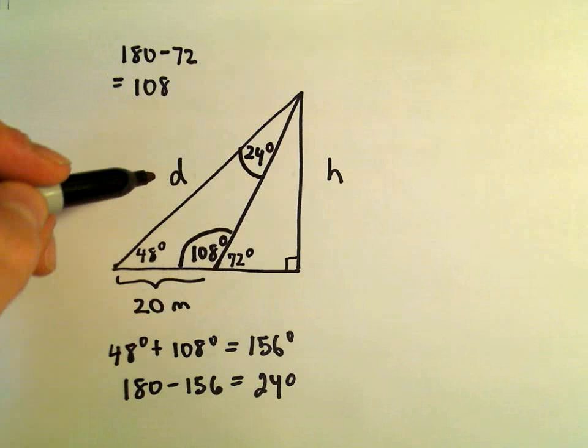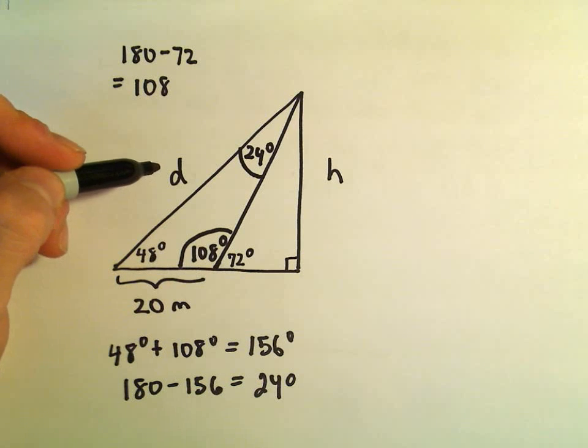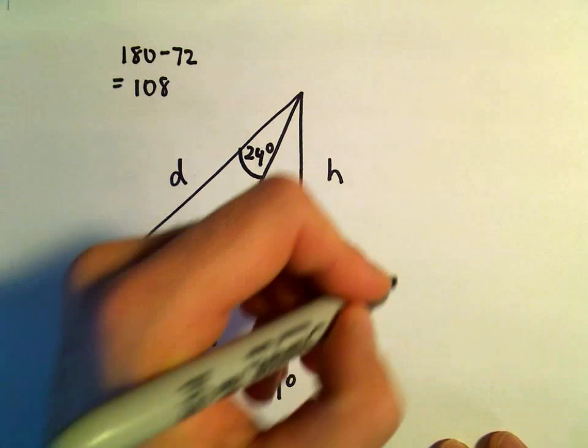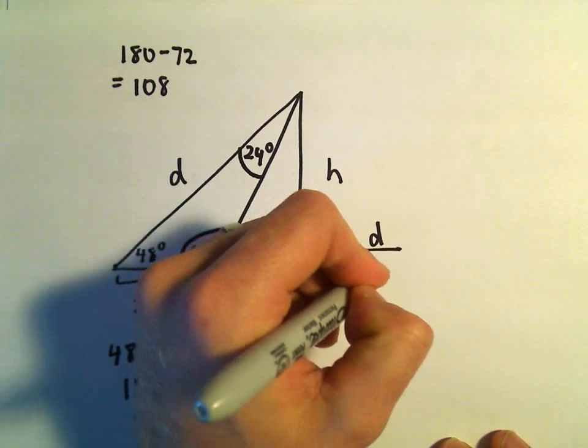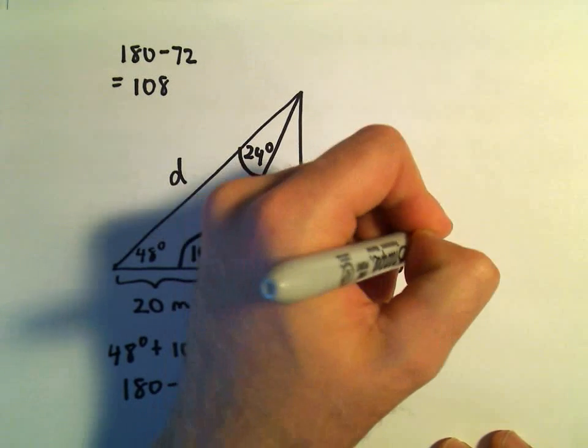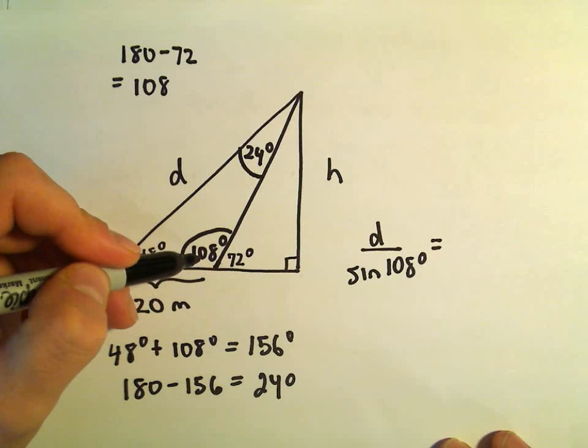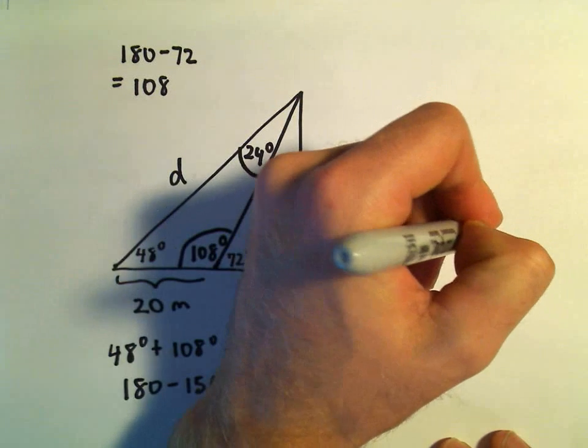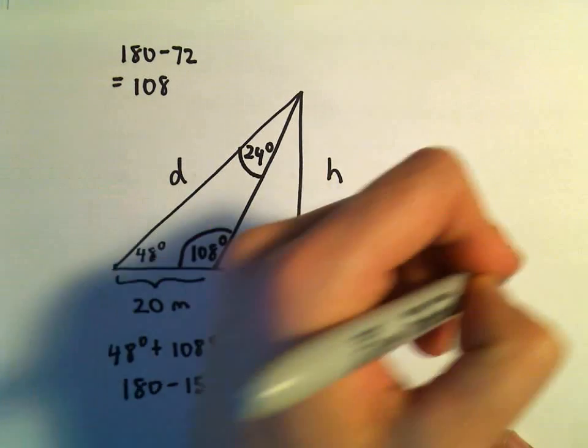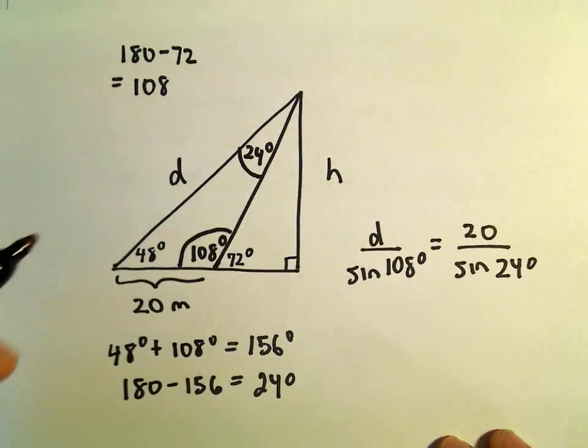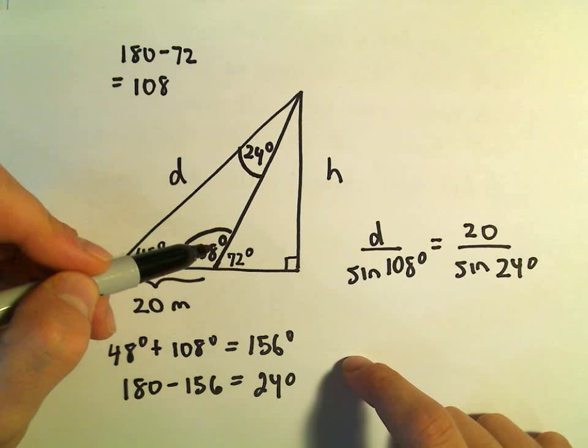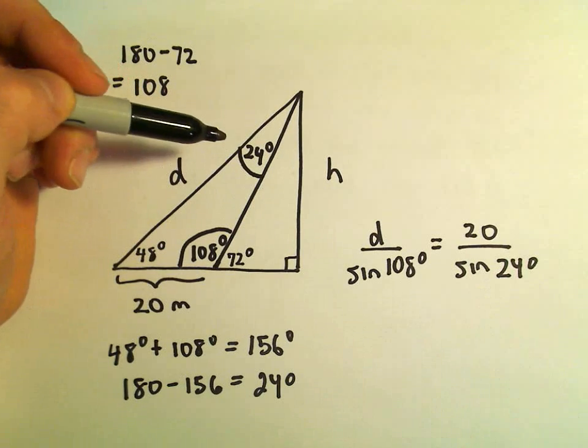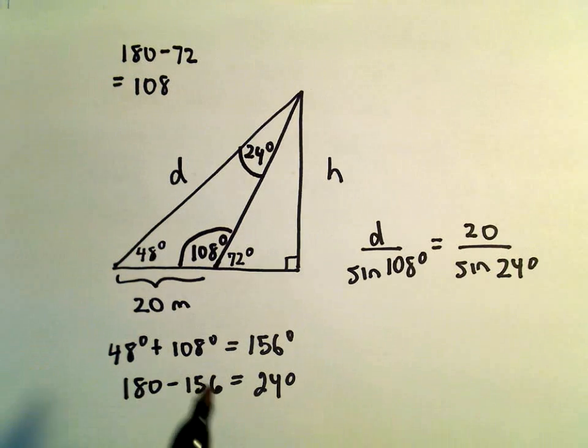And now I think we're in a position to actually figure out D, again, using the law of sines. We could say that D over sine of 108 degrees is going to equal 20 over sine of 24 degrees. So again, I'm just saying this length over sine of this angle is going to equal this length over sine of that angle.